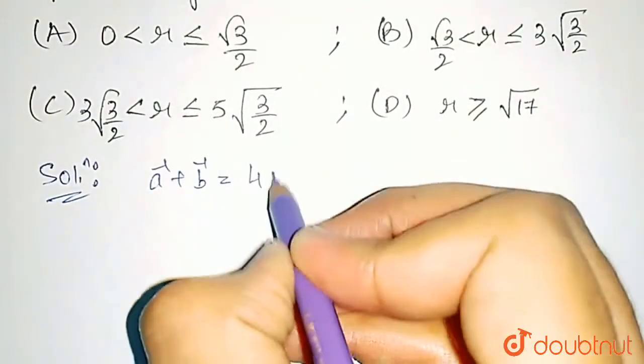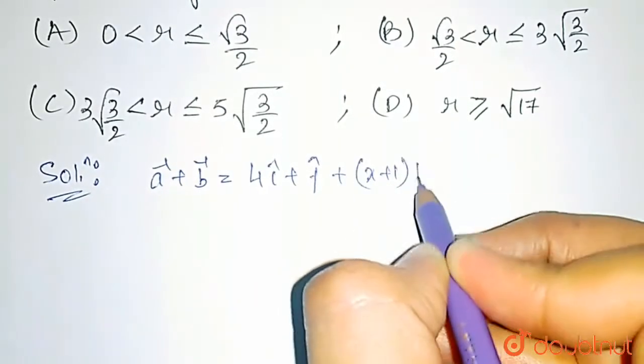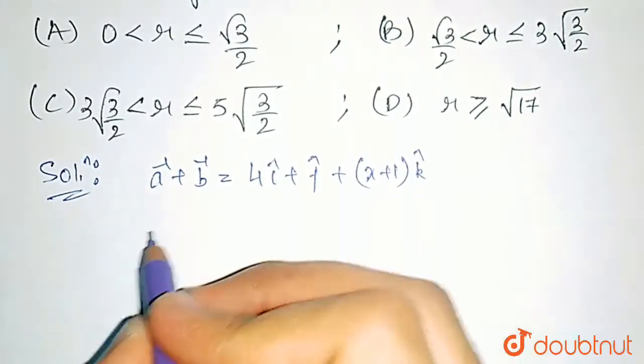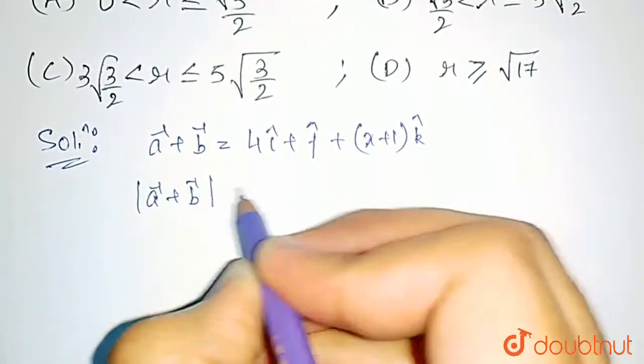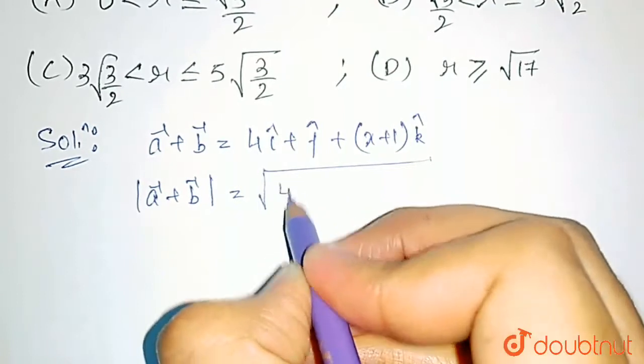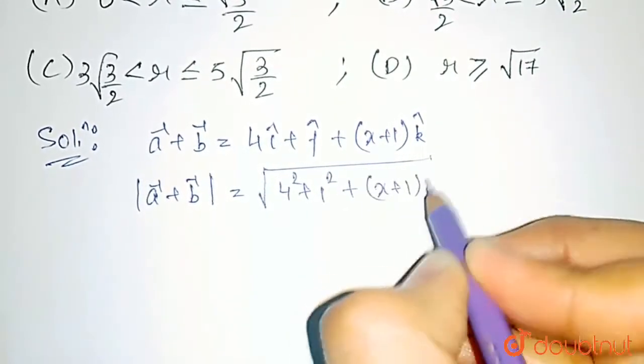So, a plus b vector equals 4i plus j plus (x plus 1) k cap. Now, the magnitude of a plus b vector would be the square root of 4 squared plus 1 squared plus (x plus 1) whole squared.